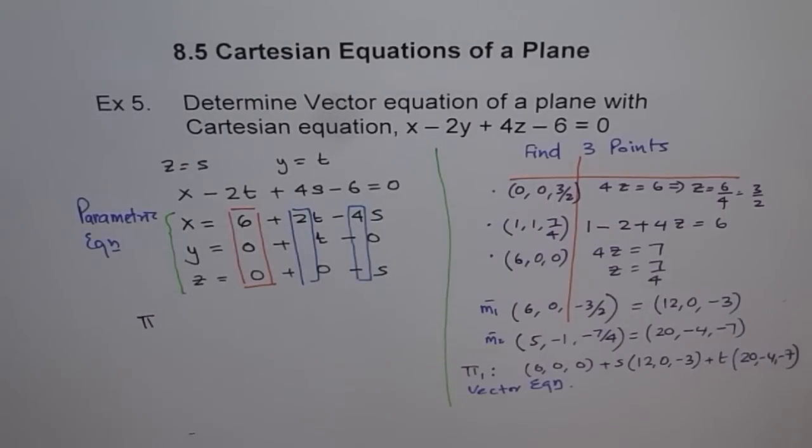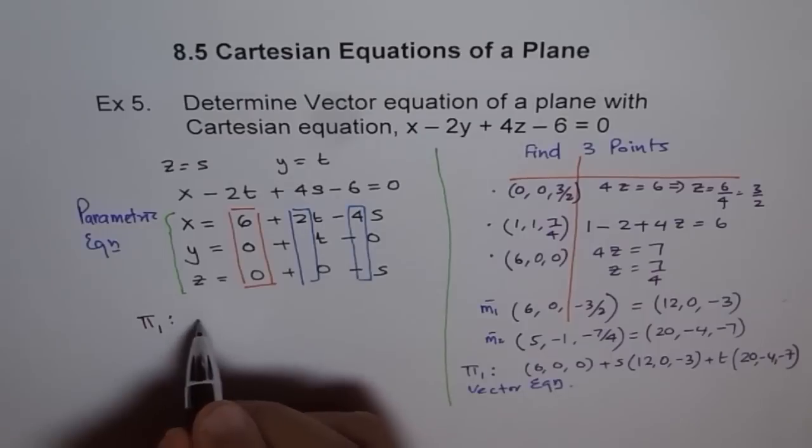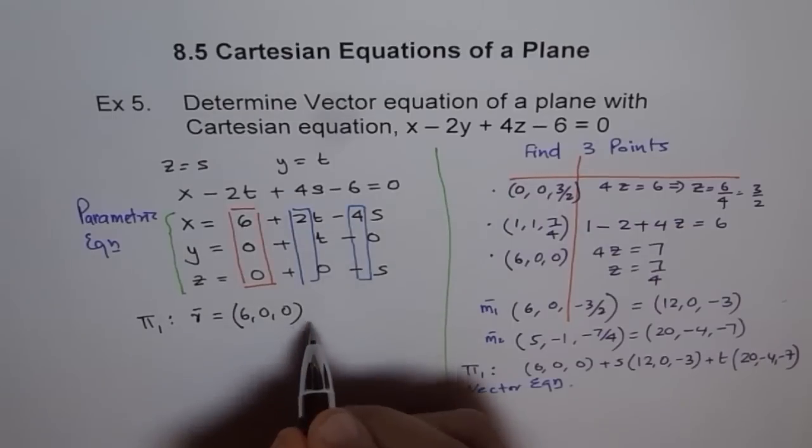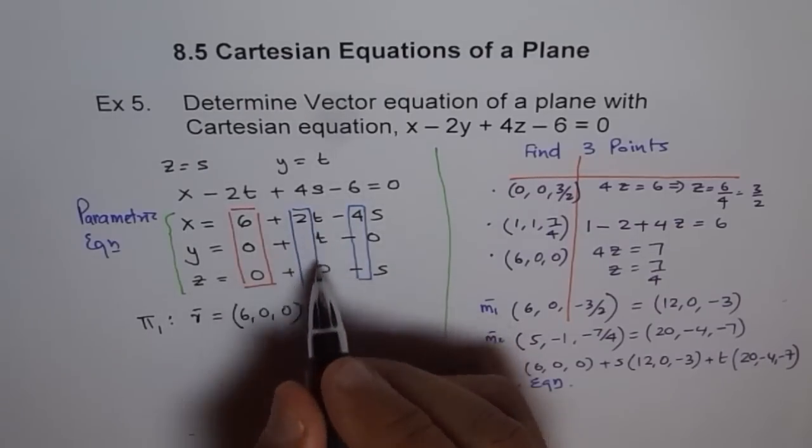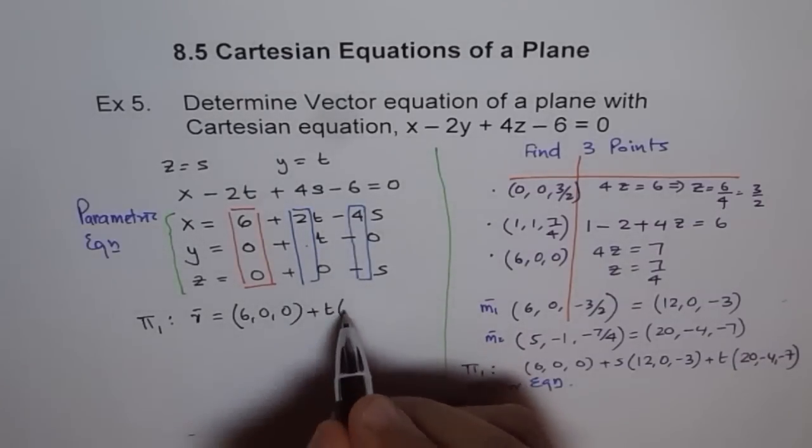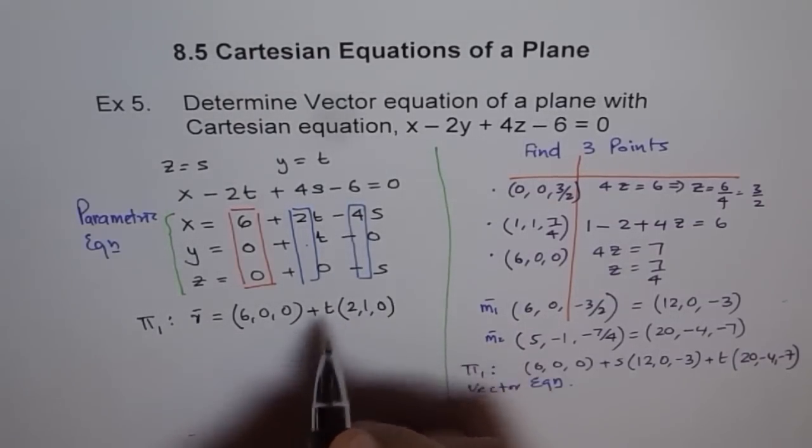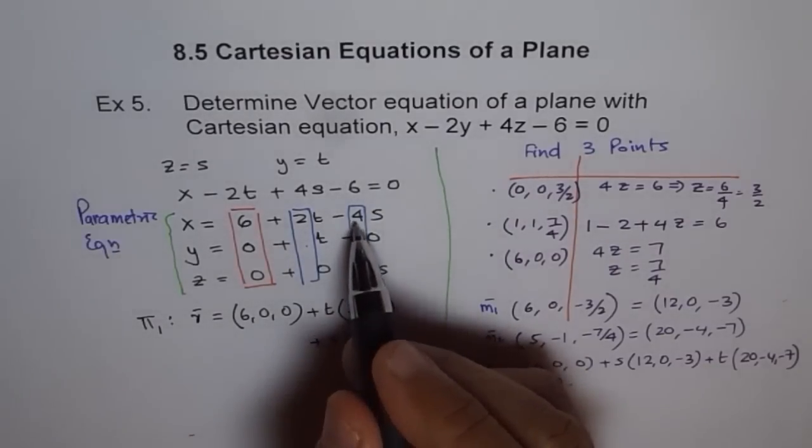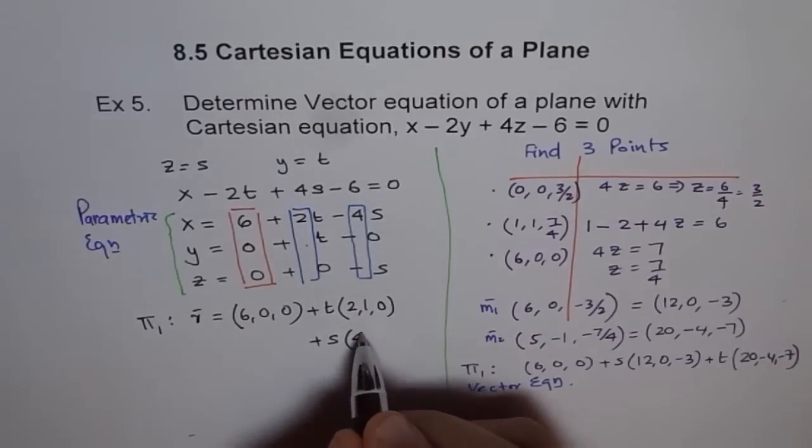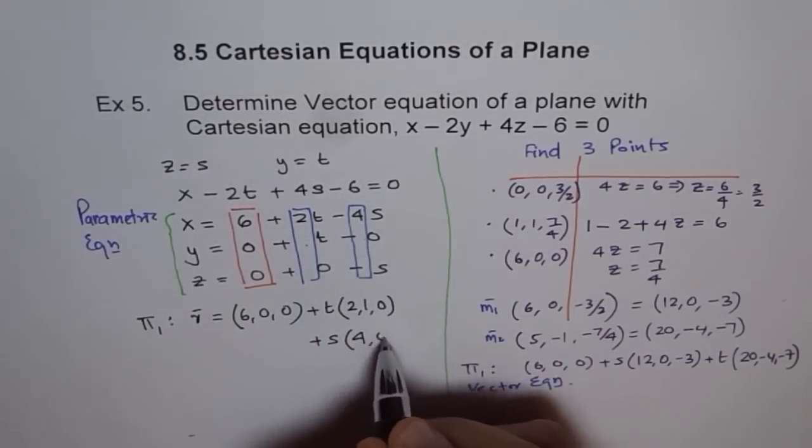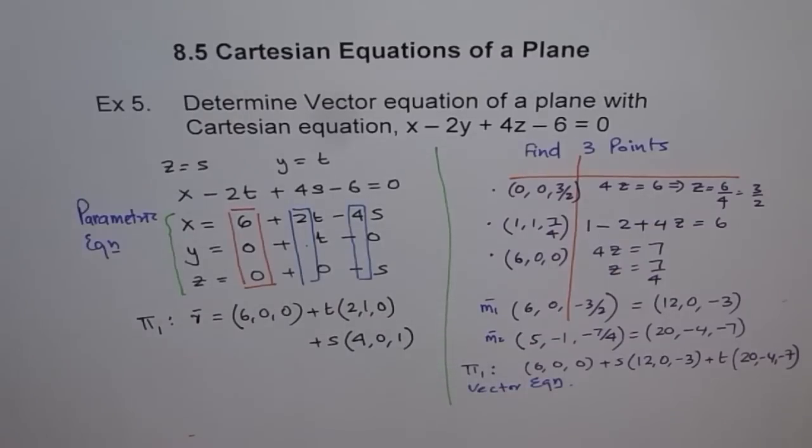And I say my plane pi 1 is equal to, let me see, R equals 6, 0, 0, plus T times 2, 1, 0. Do you see that? 2, 1, 0. And here it is, S times 4, 0, 1. You see, 4, 0, and 1. Do you see that? That is how we can write this equation in vector form using the parameters.